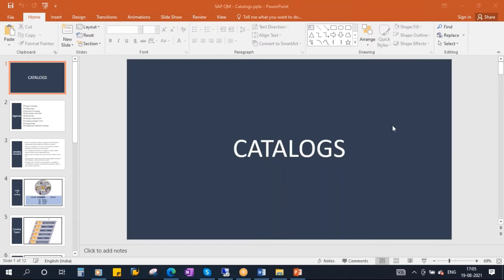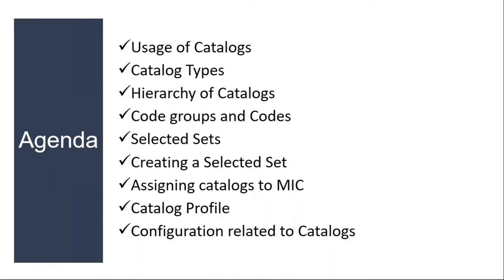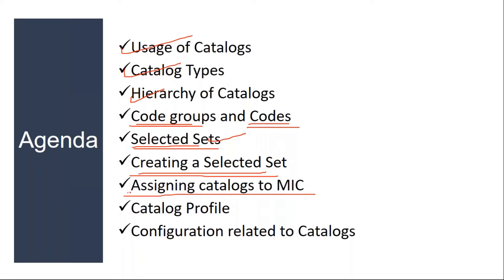We'll be starting our next topic: catalogs. The topics we're going to cover include the use of catalogs, the different types of catalogs, the hierarchy of catalogs, code groups and codes, creating selected sets in the system, assigning catalogs to the MISes, and catalog profile. We will not be creating a catalog profile today, but we'll discuss it. We'll also see the configuration related to catalogs.